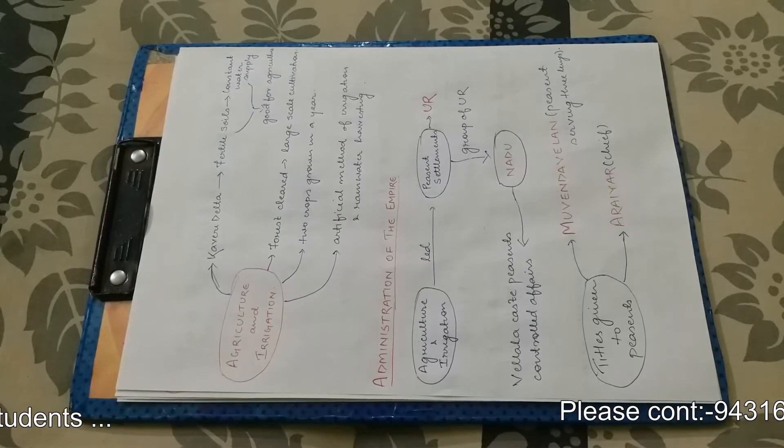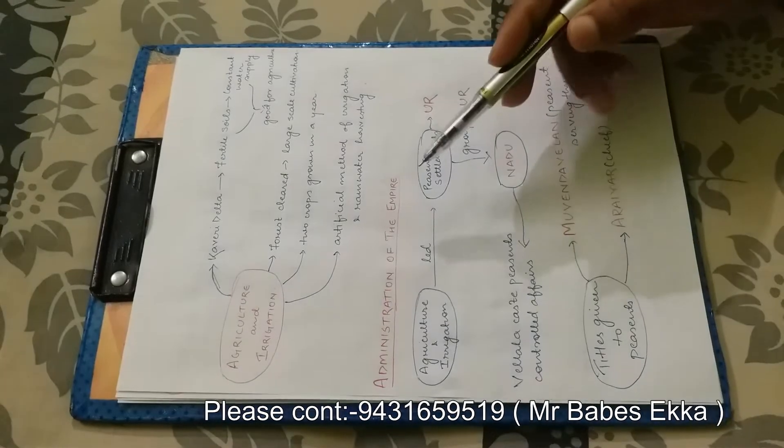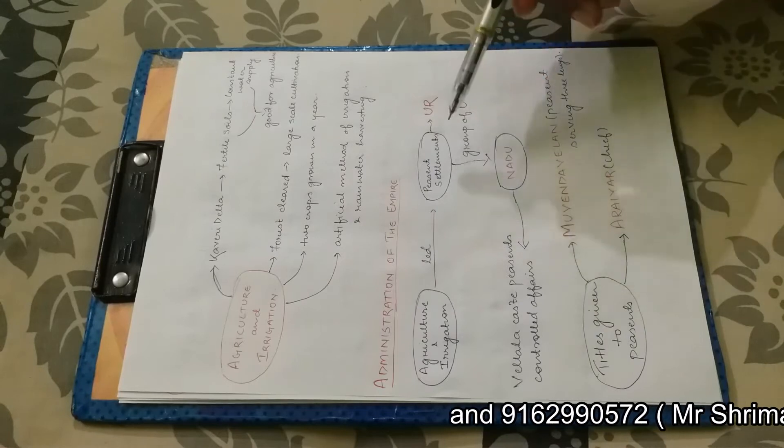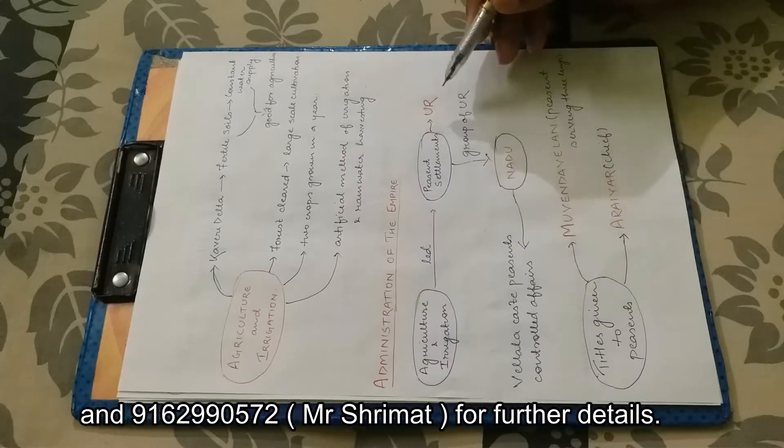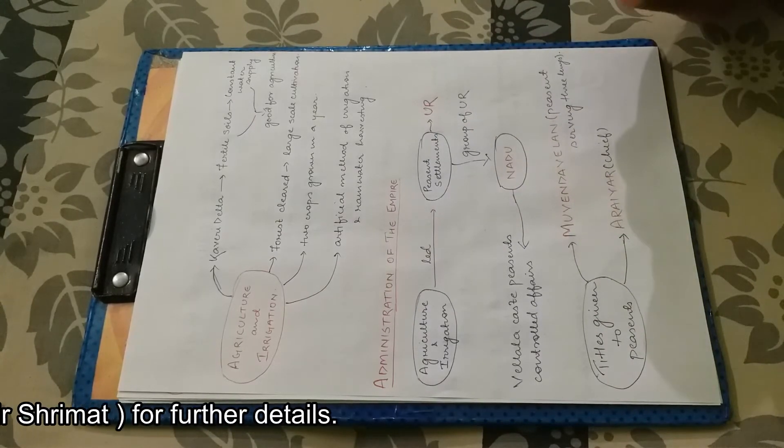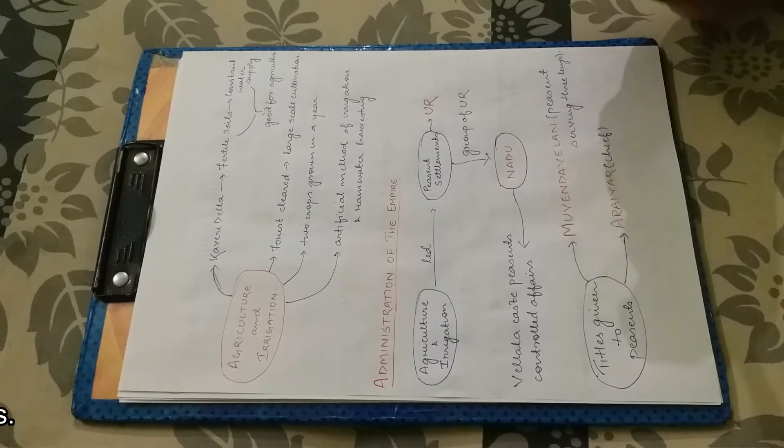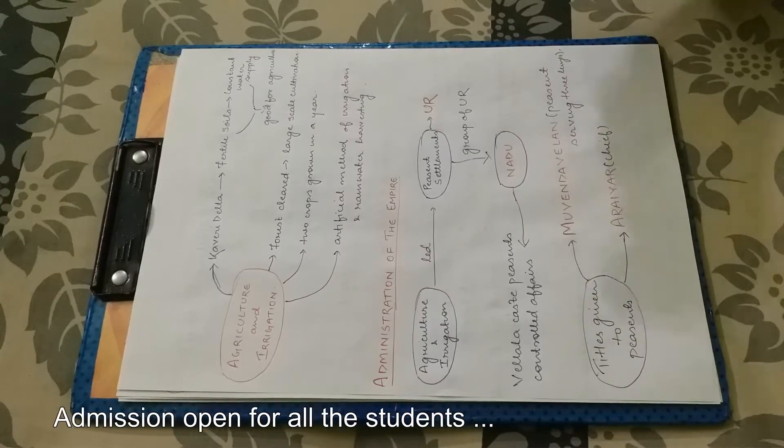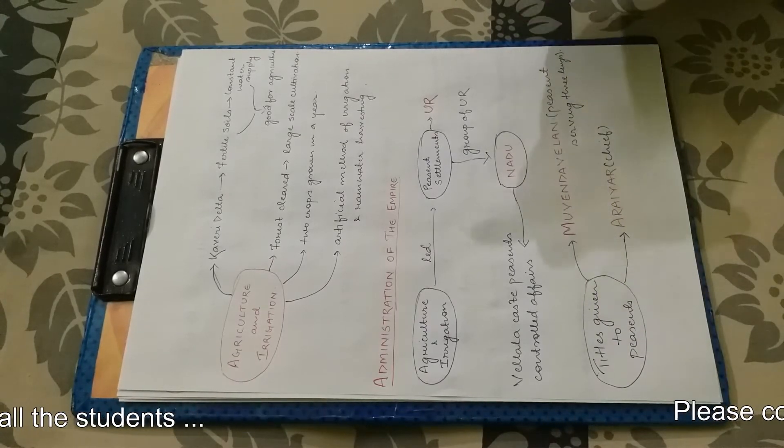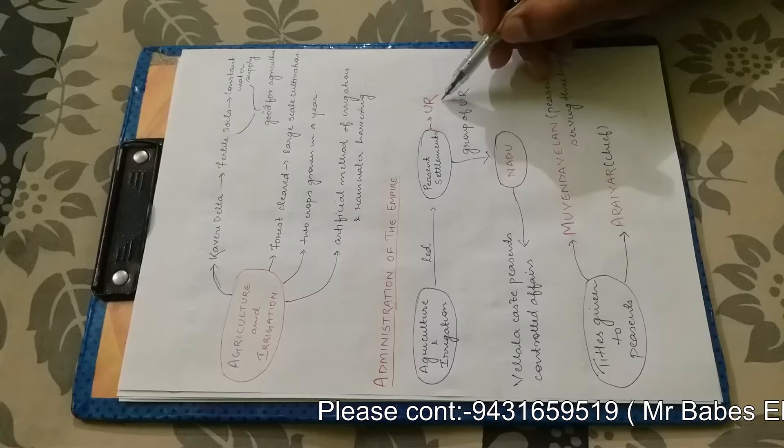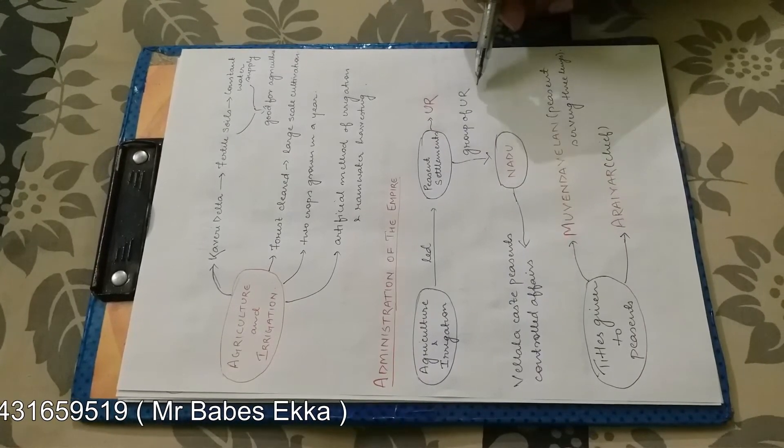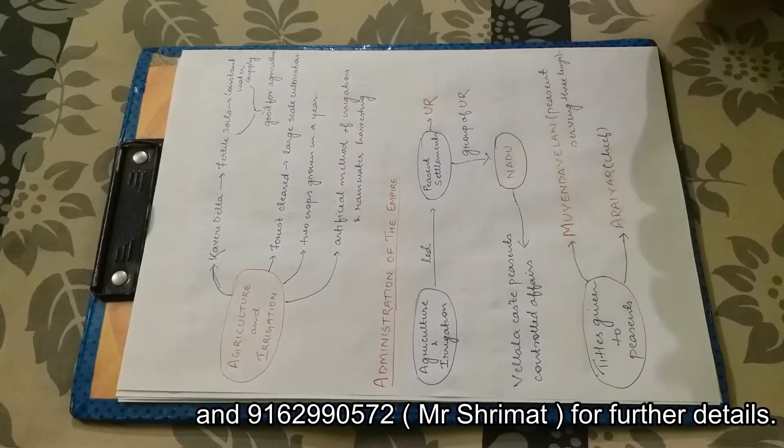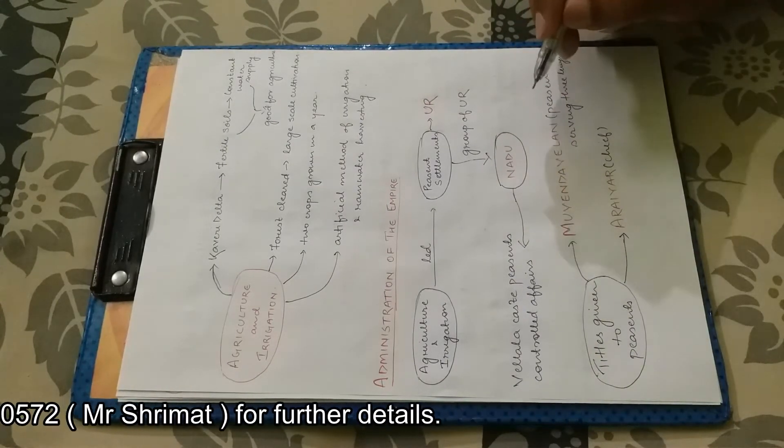Now, if we learn about the administration of empire, we learn about Cholas. What was the administration of empire in Cholas? Agriculture and irrigation related to peasant settlement. Agriculture began because of peasant settlement. Where agriculture began, there were peasants. And that peasants' settlement are called Ur, that is Ur. And this group of Ur are called Nardu. When many peasants' settlement groups are called Nardu, they are called Nardu.